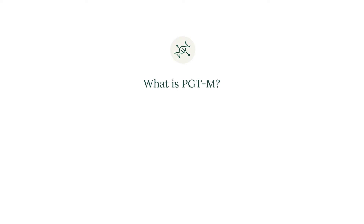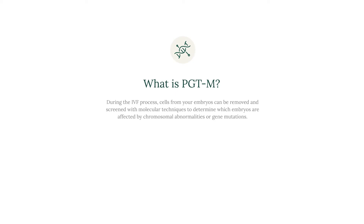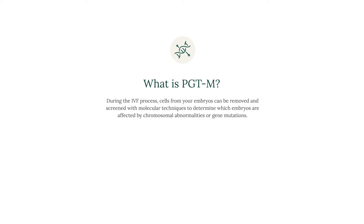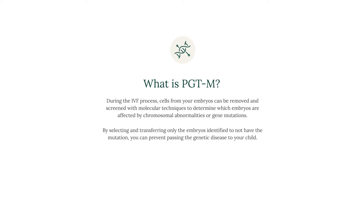Through advancements in reproductive genetics, cells from your embryos can be removed and screened with molecular techniques to determine which embryos are affected by chromosomal abnormalities and/or single gene mutations. By only selecting and transferring the embryos identified to not have one or both inherited mutations, you can reduce the risk of passing mutations to your children and commence your pregnancy with an unaffected embryo.